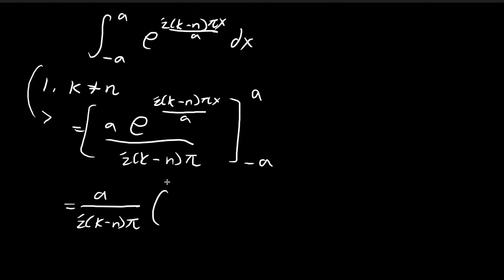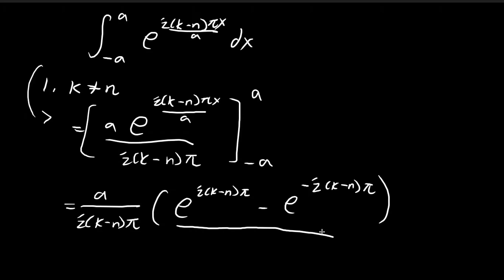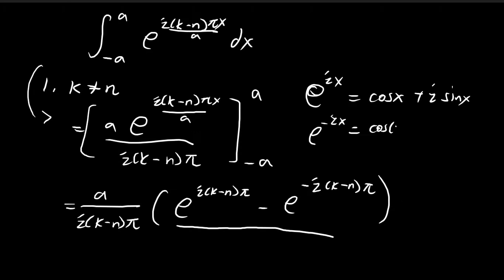Isolating the constants on the outside and substituting the limits a and negative a, the a in the numerator cancels with the a in the denominator. We then apply Euler's formula: e to the power of ix equals cosine x plus i sine x, and e to the power of negative ix equals cosine x minus i sine x, since cosine is even and sine is odd.